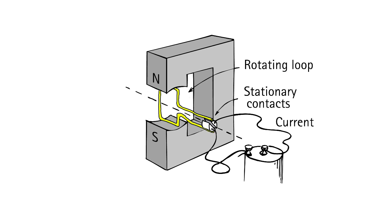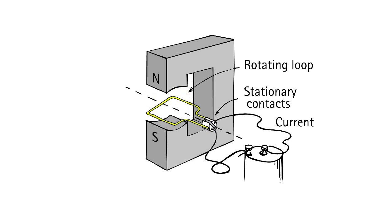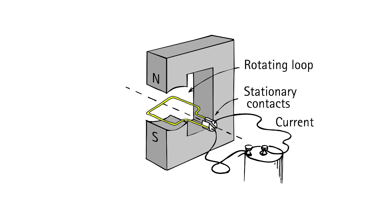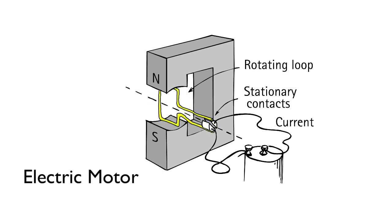And if at that moment you flip the direction of the electric current, the loop will then proceed toward the other magnetic pole. Keep flipping the current, and the loop keeps rotating. You have what we call an electric motor.